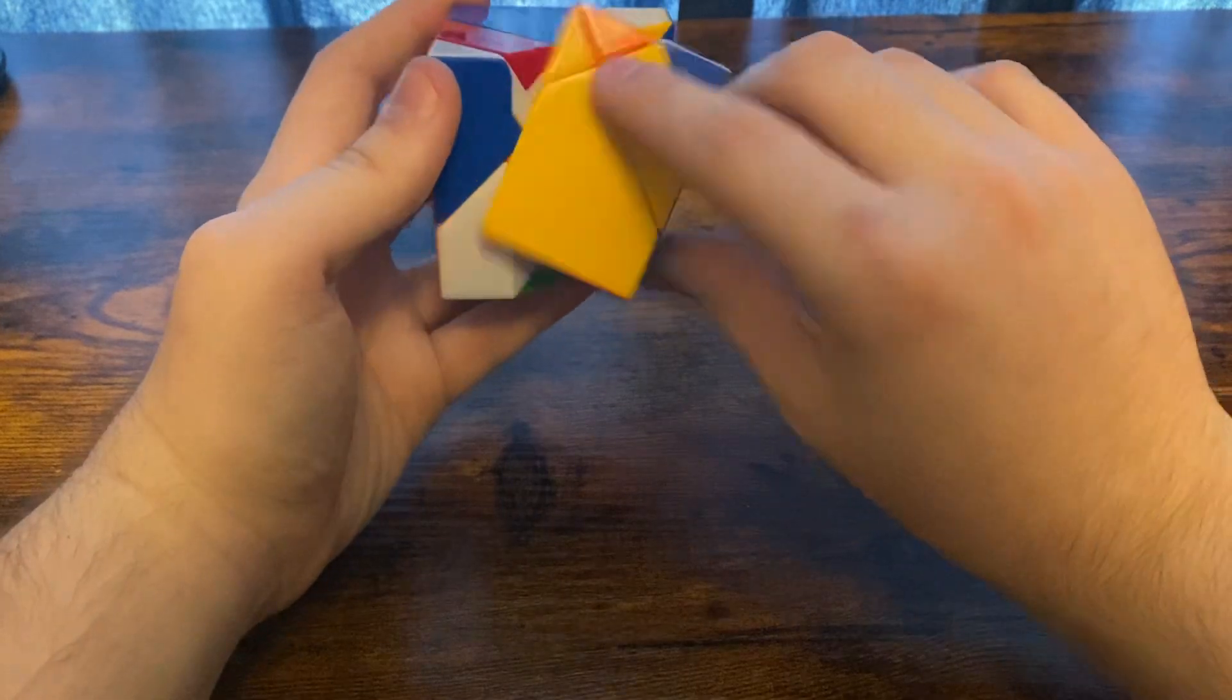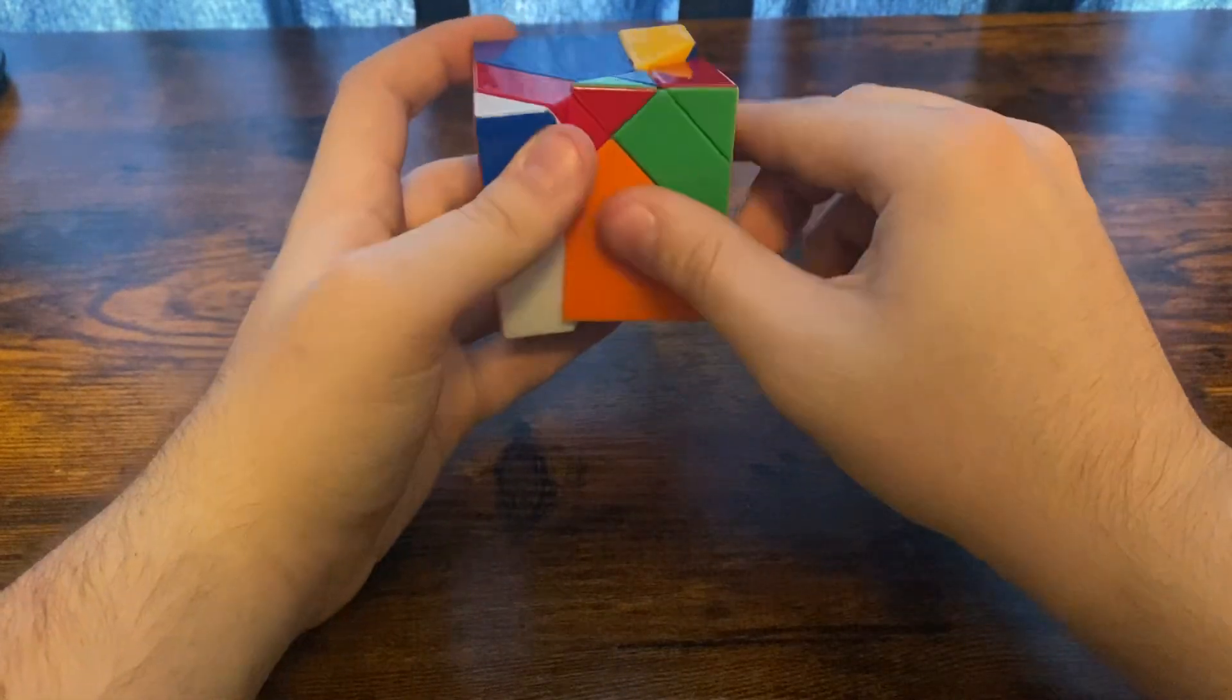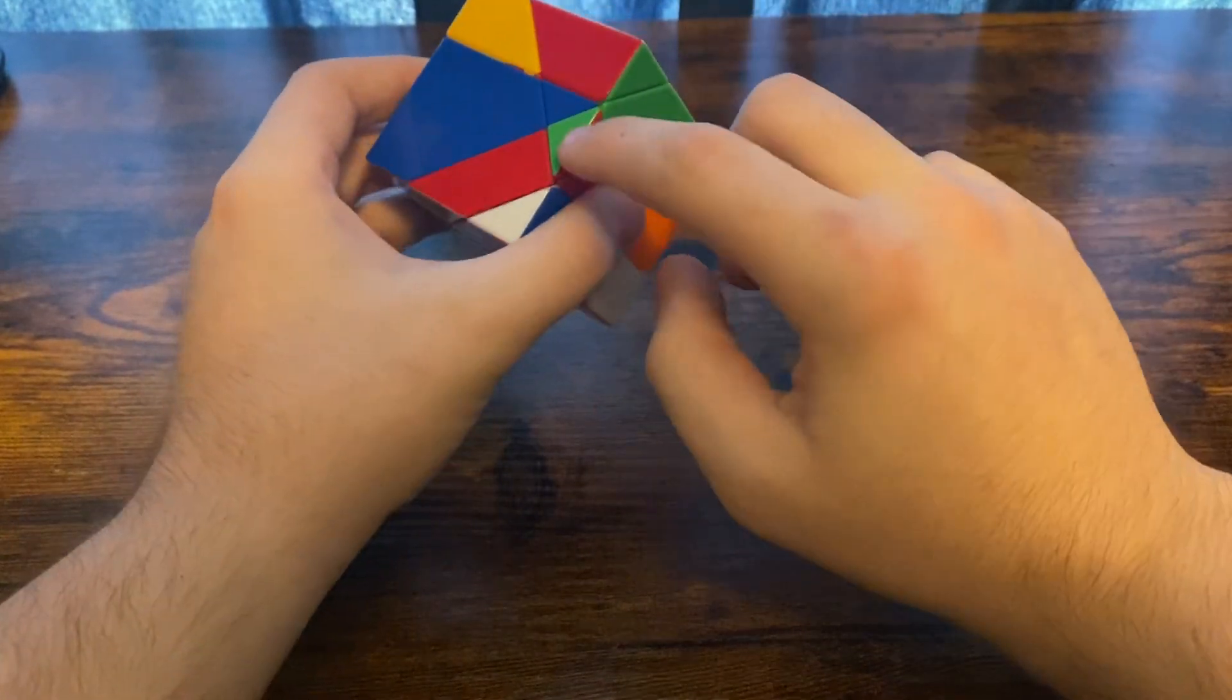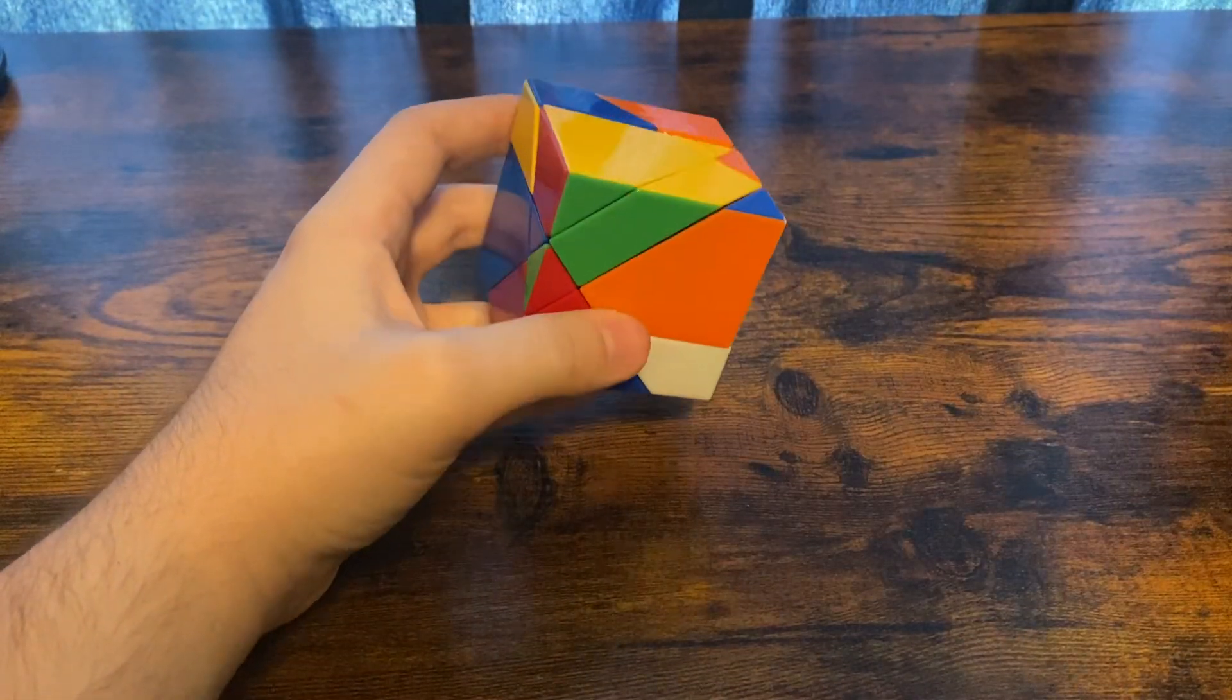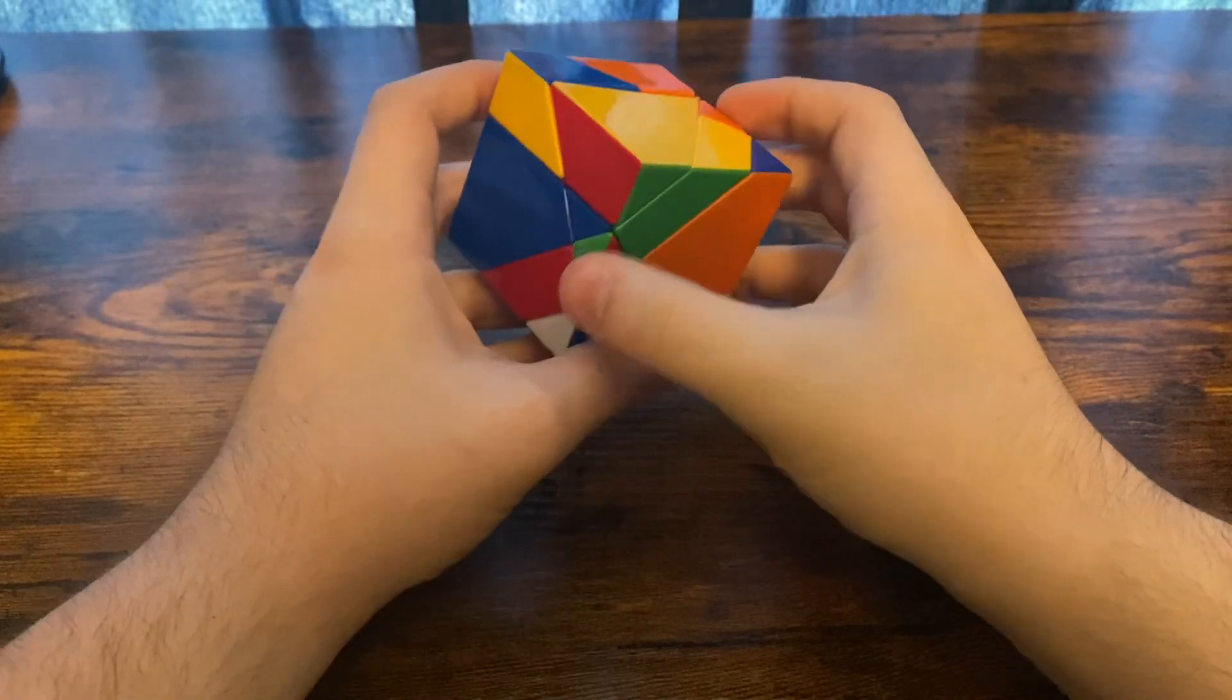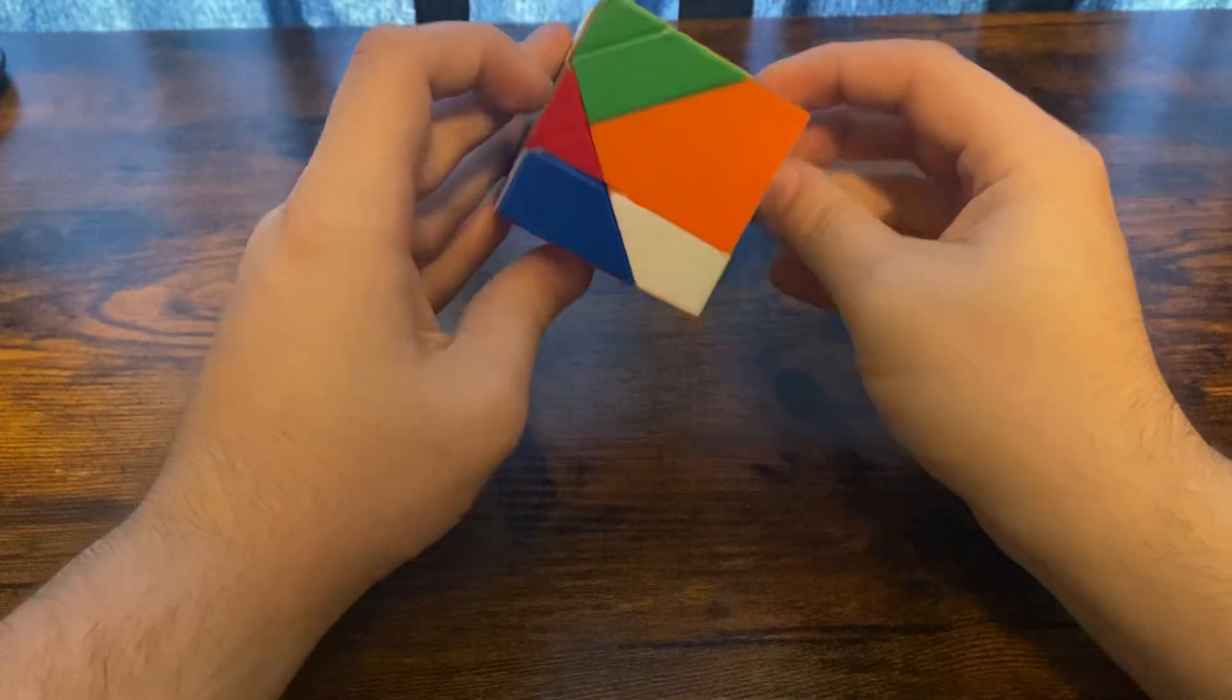Then you'll want to rotate this other side so that way these little edges are in the right places. At this point they will either be solved or two of them will be flipped.